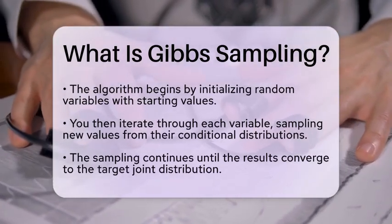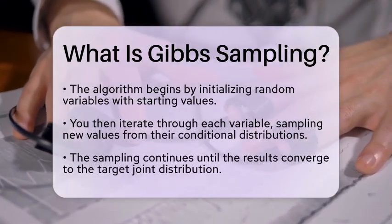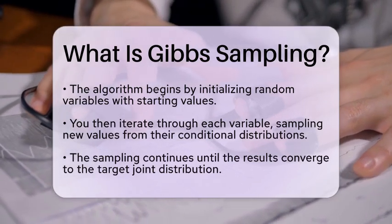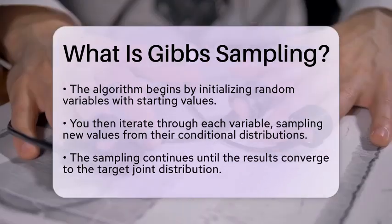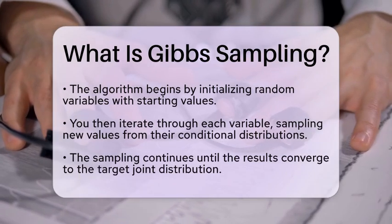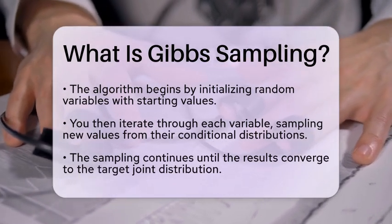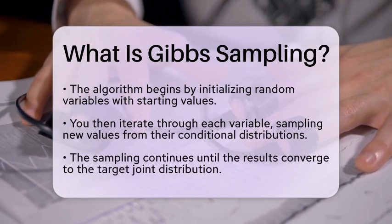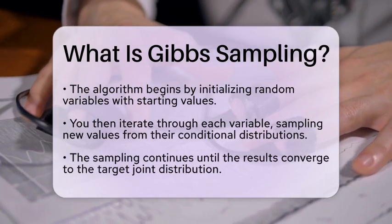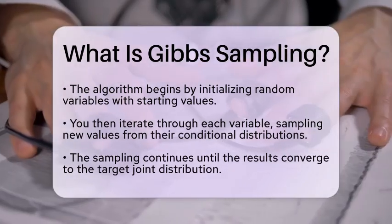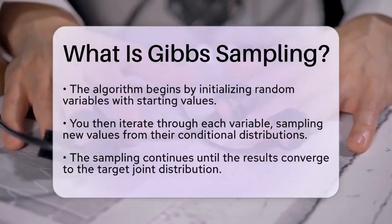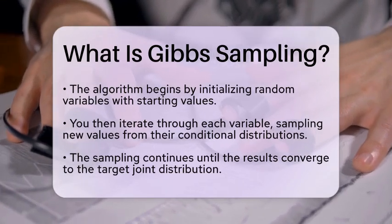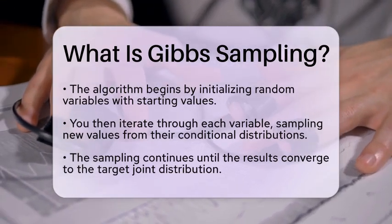Gibbs sampling finds its applications in various fields, particularly in Bayesian networks. These networks are graphical models that depict relationships between variables using conditional probabilities, making Gibbs sampling an ideal fit for statistical inference in these models. You can also find Gibbs sampling in machine learning, image analysis, and data modeling.